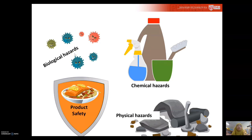Biological hazards include food pathogens like E. coli and Salmonella. Then there are chemical hazards. Chemical hazards can come from your cleaning detergent — the cleaning detergent used to clean the processing line — and it can also come from the grease used in any mechanical moving parts.